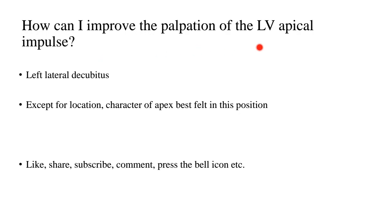Lastly, how can you improve the palpation of the LV apical impulse? You can change the position of the patient and make them lie in the left lateral decubitus. Except for the location of the impulse, everything else about the apical impulse — its character, whether it is normal, hyperkinetic, sustained (heaving), or tapping as seen in mitral stenosis — can be understood better in this left lateral position. Like, share, subscribe, comment, and press the bell icon, and I will see you next time with another video.